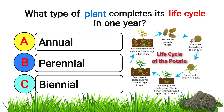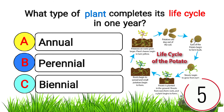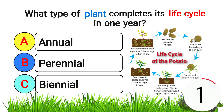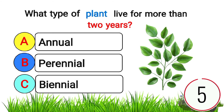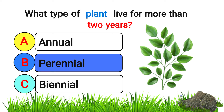What type of plant completes its life cycle in one year? Answer: annual. What type of plants live for more than two years? Answer: perennial.